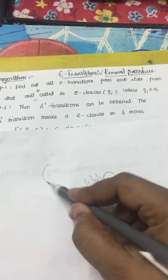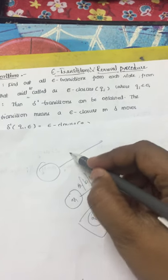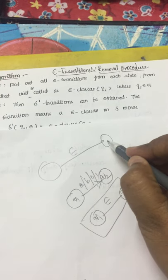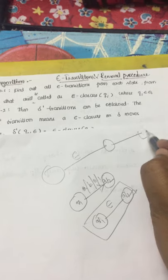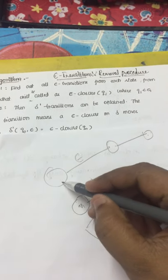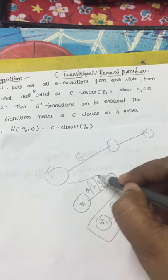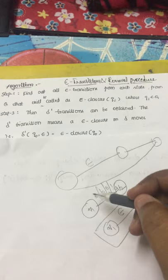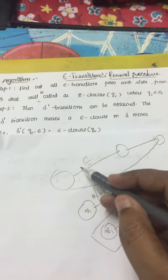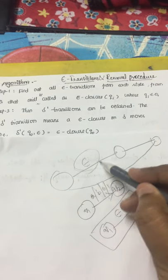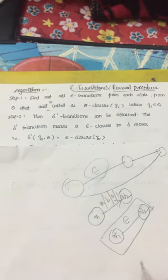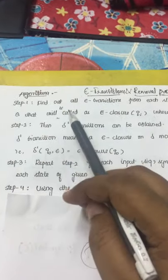Wherever we find an epsilon move in a finite automata, we say it is an epsilon finite automata. Now we are going to see how to remove this epsilon move from the finite automata, so let us see the algorithm first.